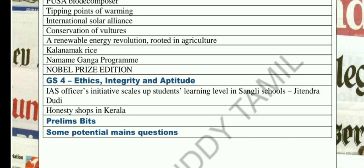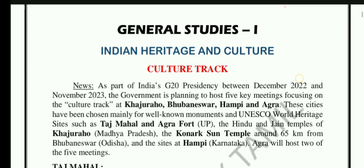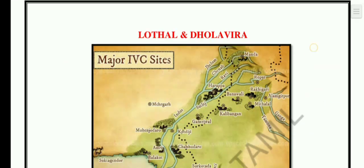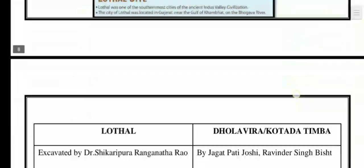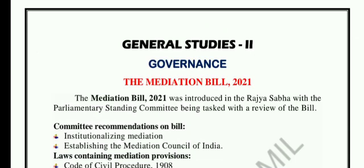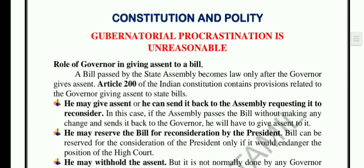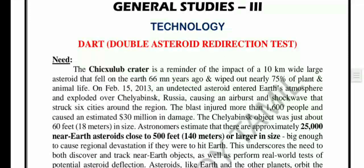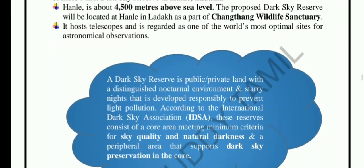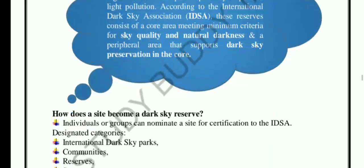In the prelims bits section, we will include any of the contents of the list, because sometimes in MCQs you can see factual information, and it covers some potential mains questions. GS1 Indian Heritage and Culture — you can see the pictures, the differentiation, tabular columns, and comparisons. The governance articles, Constitution and related subtopics on GS2 and GS3, environment and biodiversity, and GS3 security and international relations in GS2 are also covered.